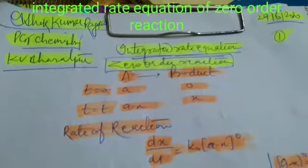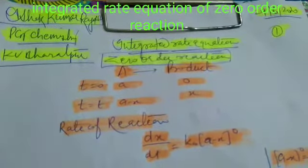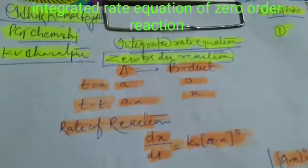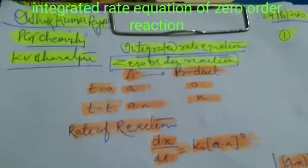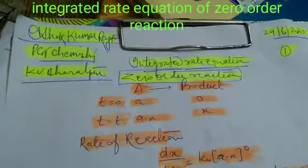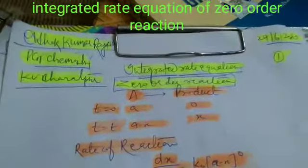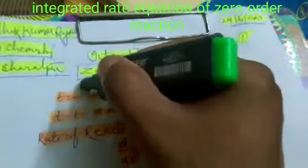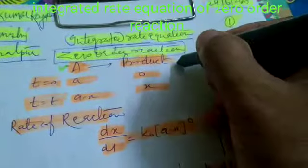Now the next topic is integrated rate equation for zero order reaction. Consider a reaction A converting to product.